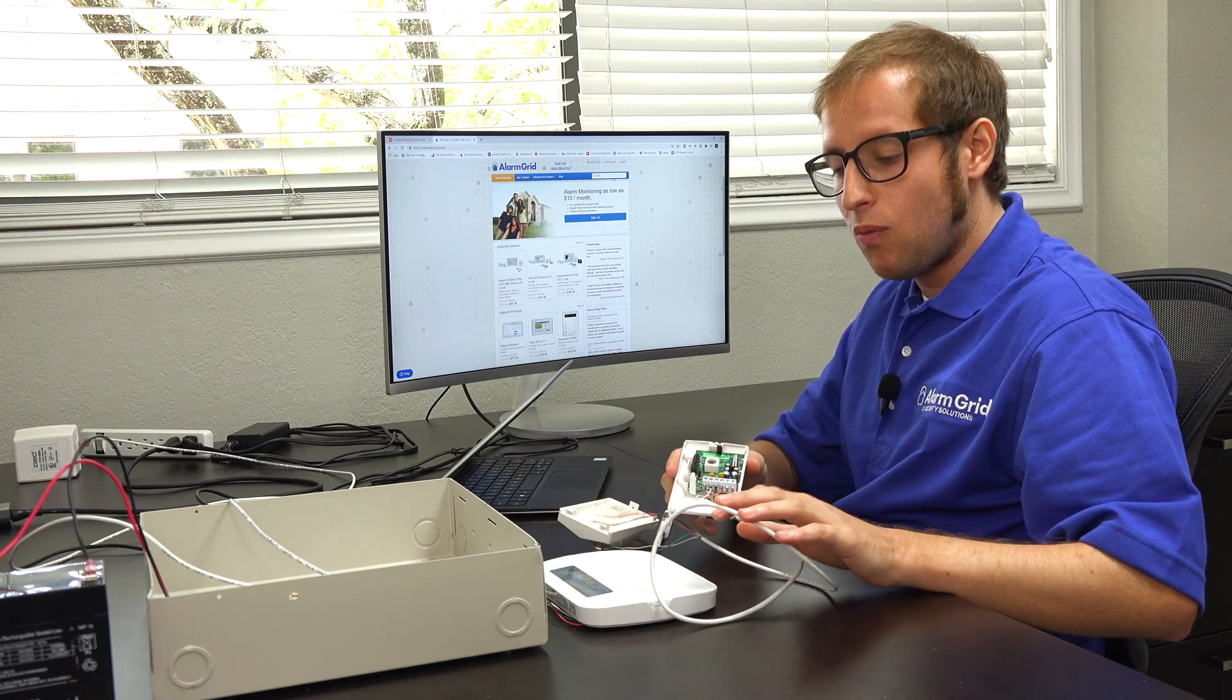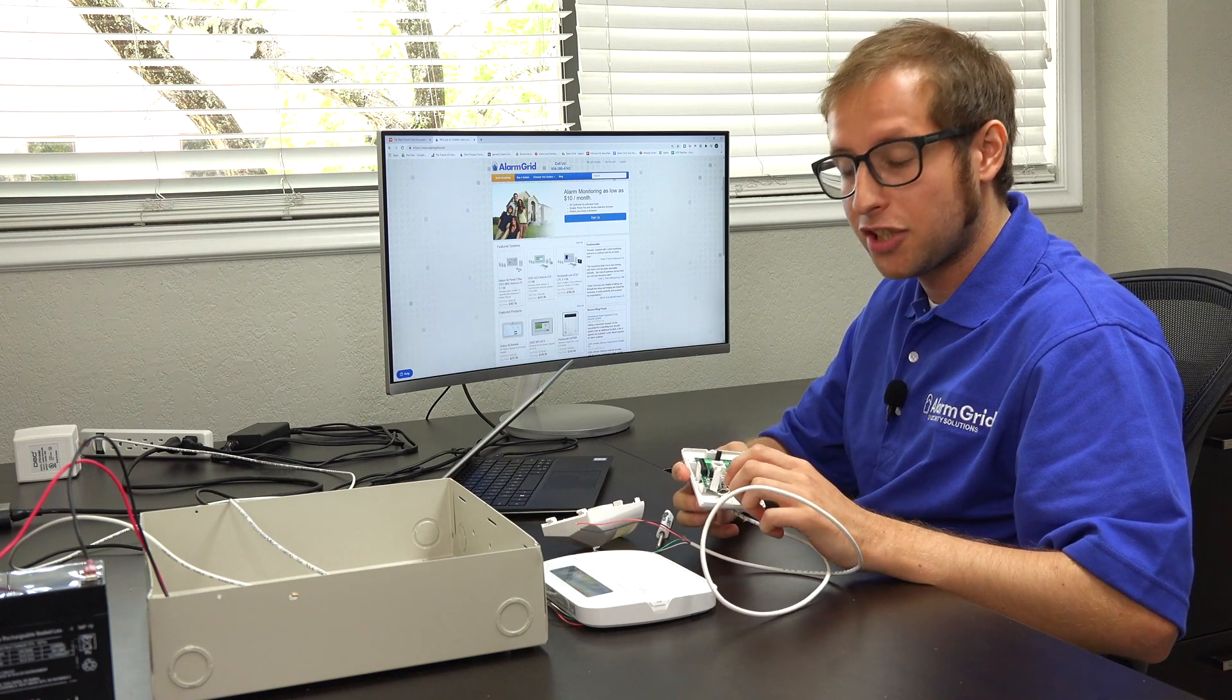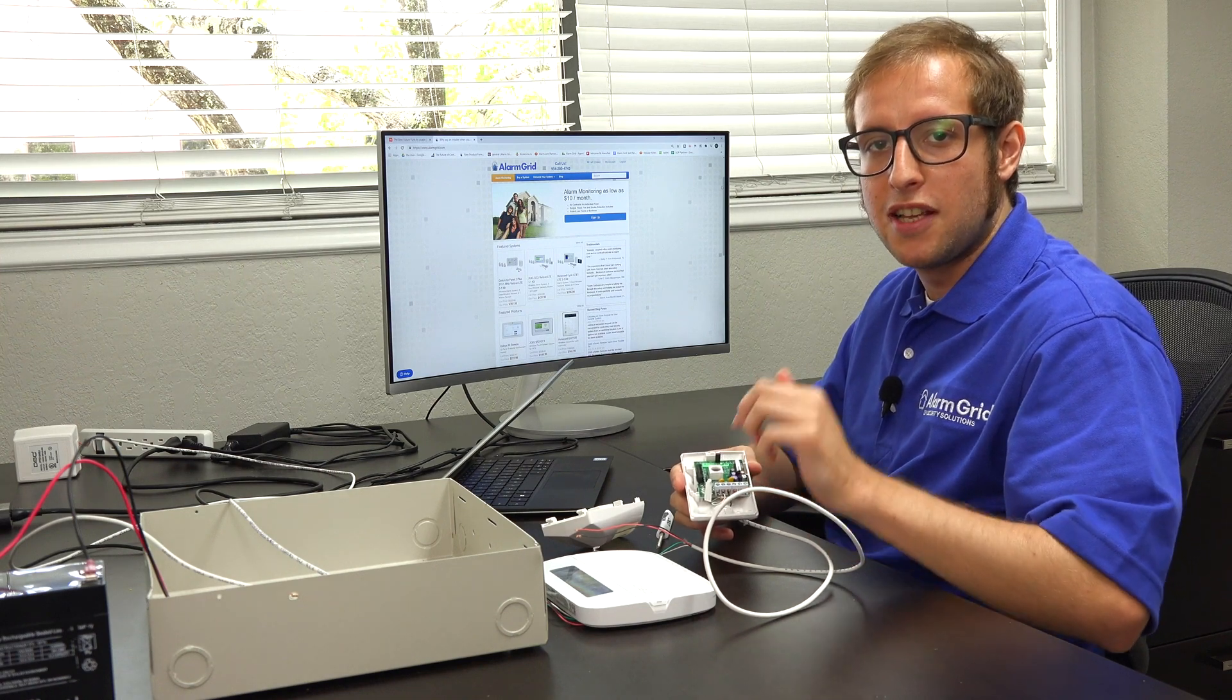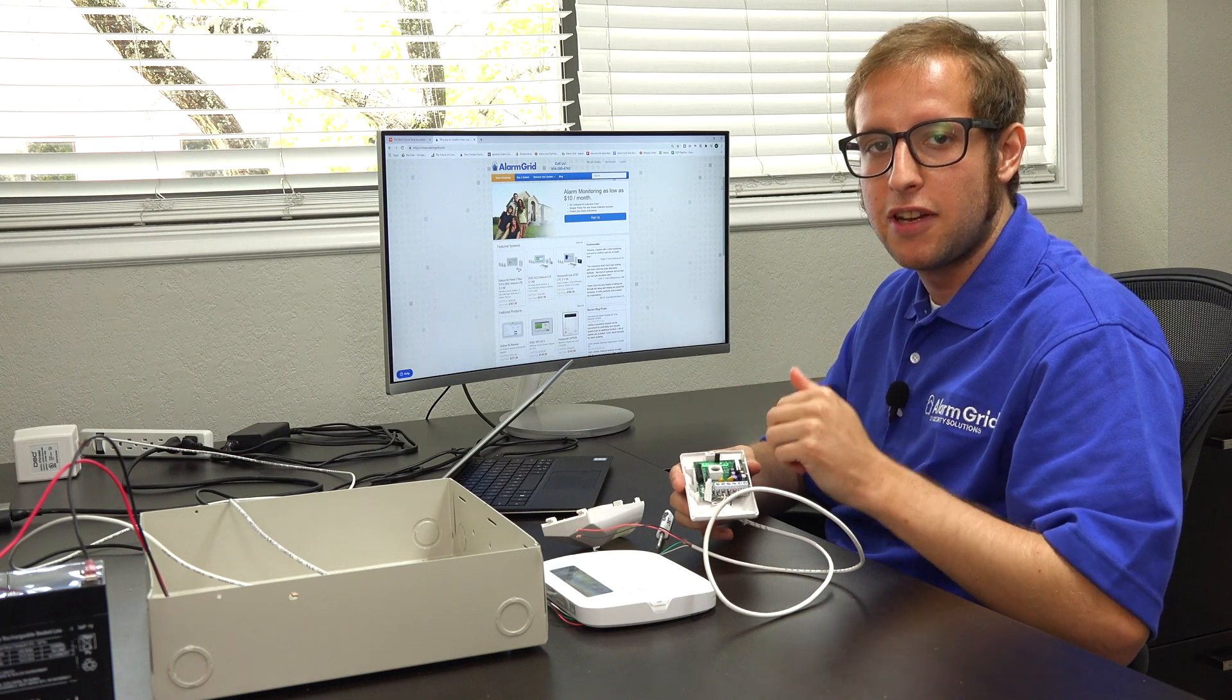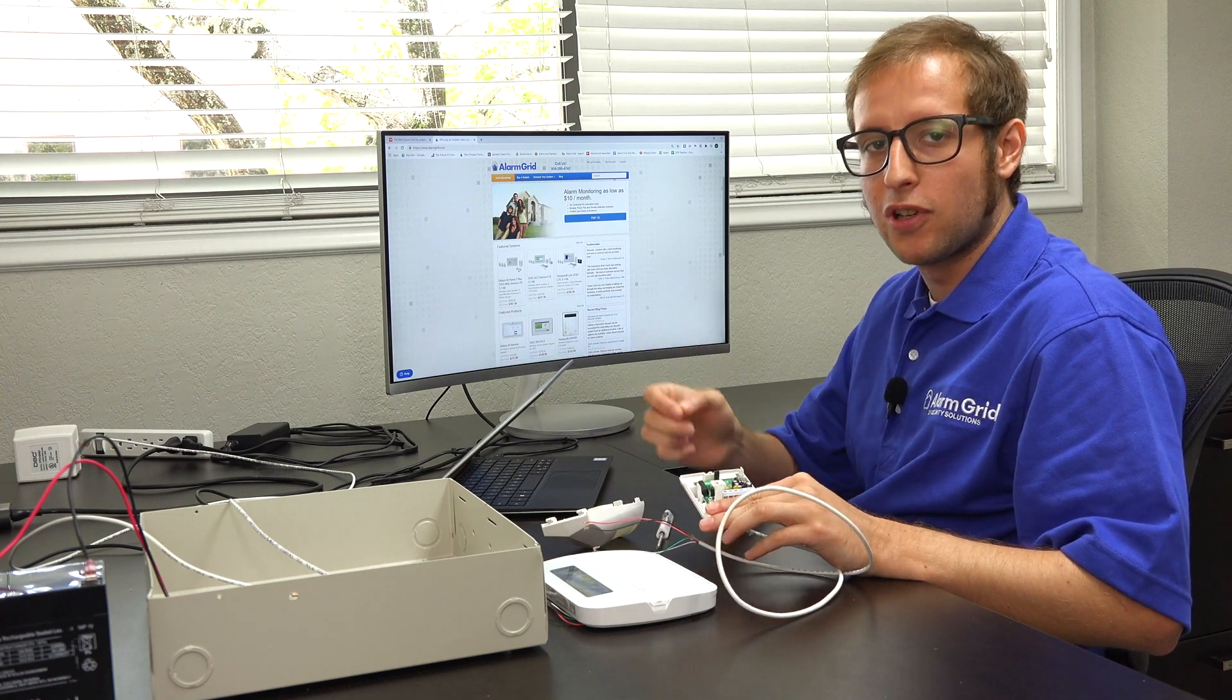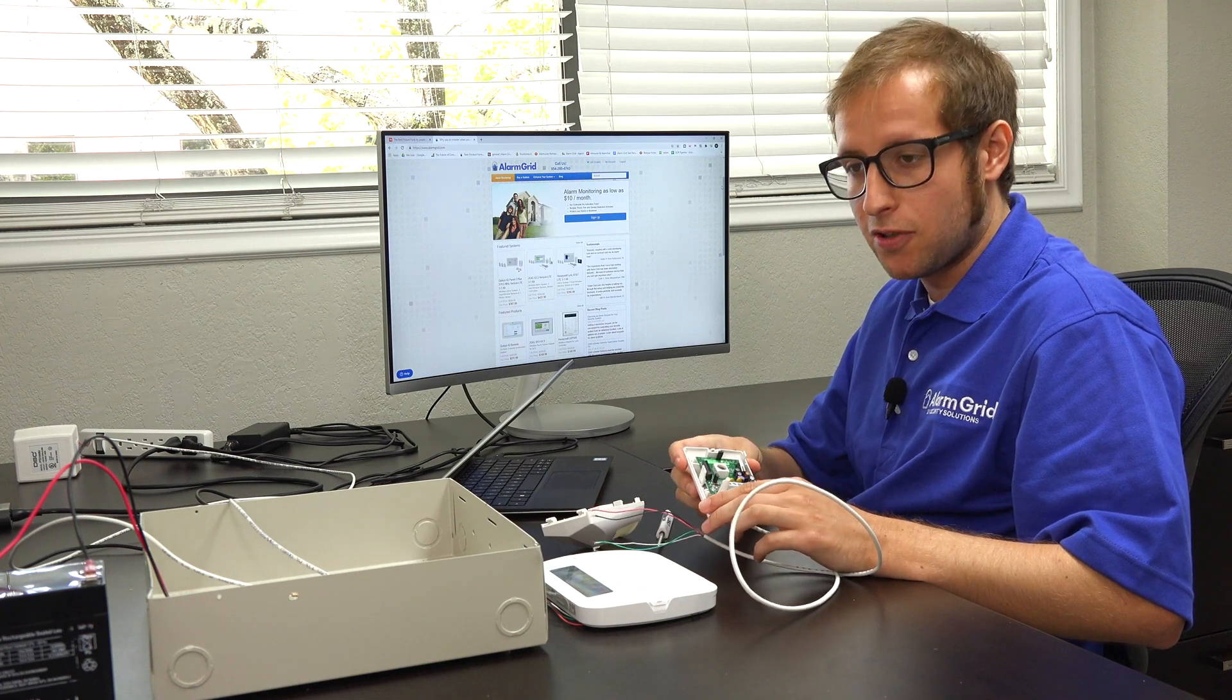We do have our sensor here, and we already have it wired up at the sensor itself. We did the four-wire connection. Some zones are only going to use a two-wire connection, in which case, that's just transmitting zone status. That's common for door and window contacts, where it just needs to know whether it's opened or closed. But in our case, we have a powered sensor, like a motion sensor.